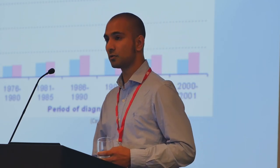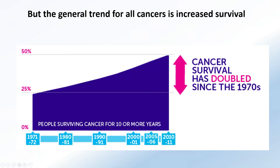What's really disappointing is that when you look at the general trend for all cancers - you can see here from Cancer Research UK statistics - cancer survival has doubled since the 1970s. So cancer research is not a gloomy story when you look at it holistically. And yet, brain tumors have seen almost no advancement based on the research done worldwide.